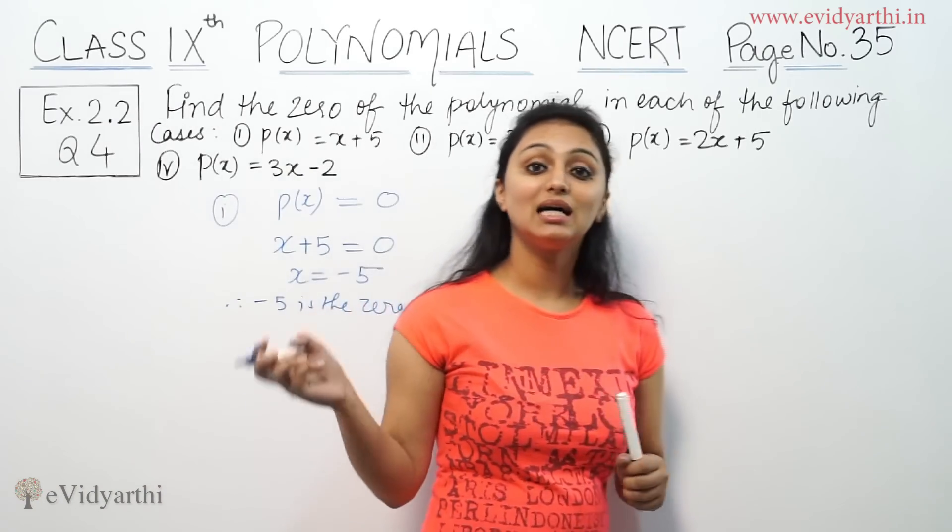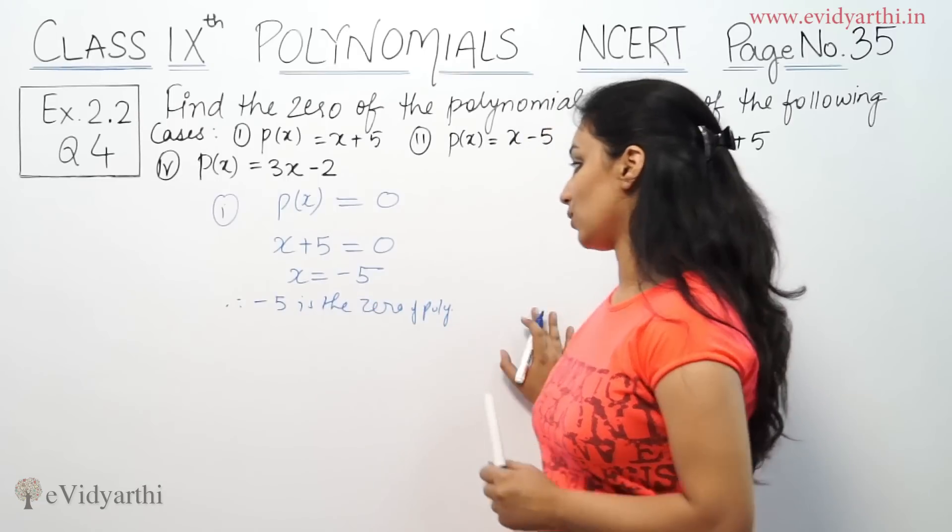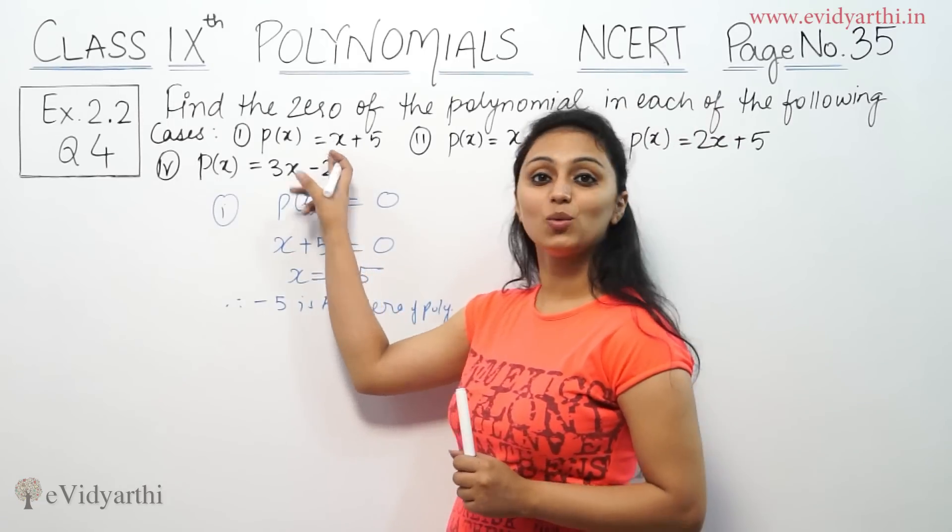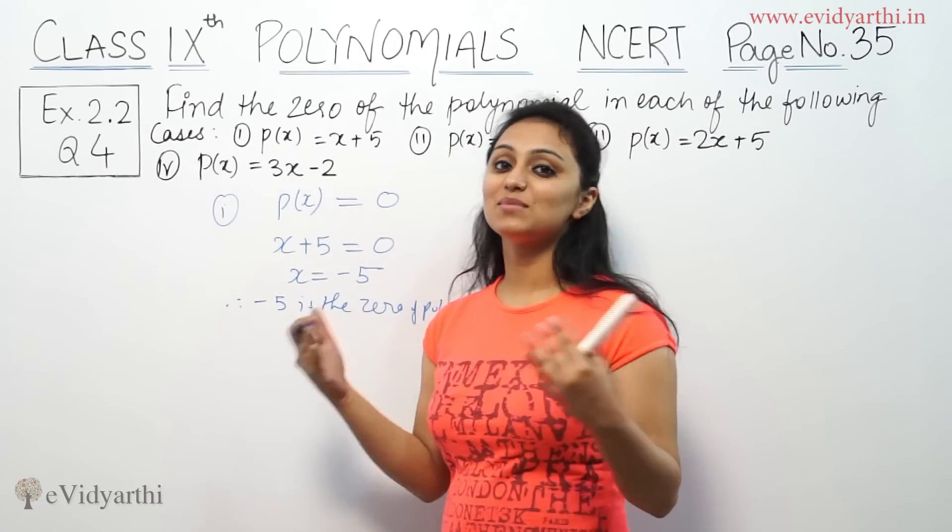Now, if we put this value in the polynomial, the answer will be zero. Suppose we add minus 5 here, then the answer will be zero.